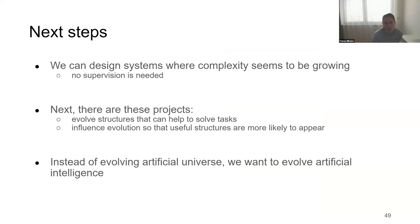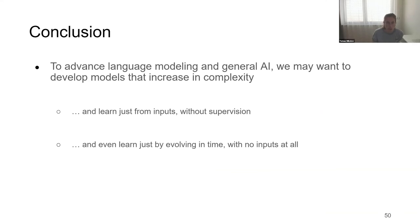Once we have these evolving structures, we can either train systems in a supervised way or try to influence the evolution in these complex systems to start solving some tasks. We're working on future steps with a small research group at Czech Technical University in Prague. The conclusion is: to advance in language modeling and general AI, we may want to develop models that can spontaneously increase complexity in an unsupervised way — similar to how evolution created the human brain.